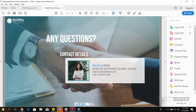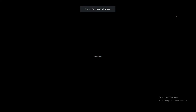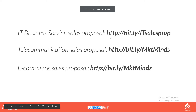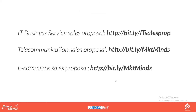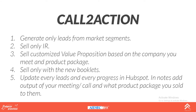Then again: process timeline, standard cost, visa fees, recommendations, and contact details. These are the two new sales booklets to use going forward. You can refer back to the provided links and approach your LCVP or MCVP for further questions. For the sales timeline going forward: generate leads only from market segments, sell only your IR partner, and sell a customized value proposition based on the company and product package.